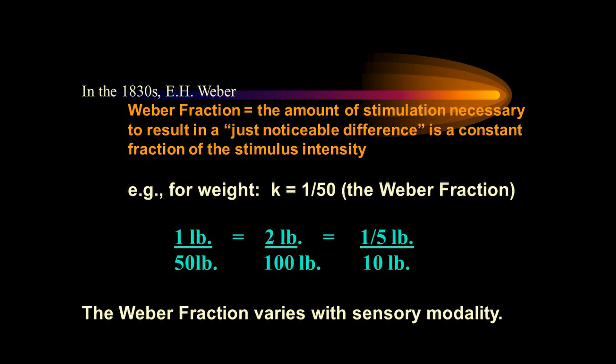If I added another 50-pound weight and you're holding 100 pounds, I know that I have to add 2 pounds in order for a just noticeable difference to occur — for you to say it got heavier 50% of the time I present you with that change. I also know that it takes a fifth of a pound to result in a JND if you're holding 10 pounds. So again, the Weber fraction involves the idea that the amount of stimulation necessary to result in a just noticeable difference is a constant fraction of the stimulus intensity.